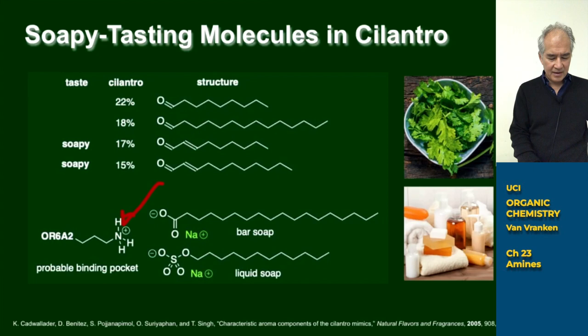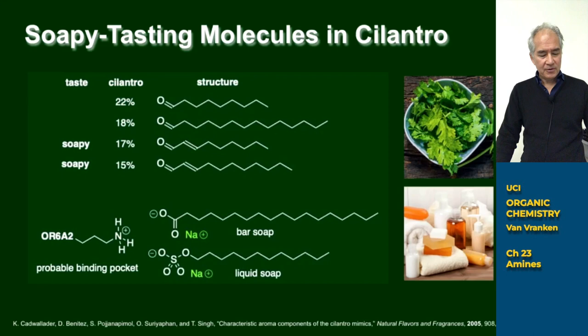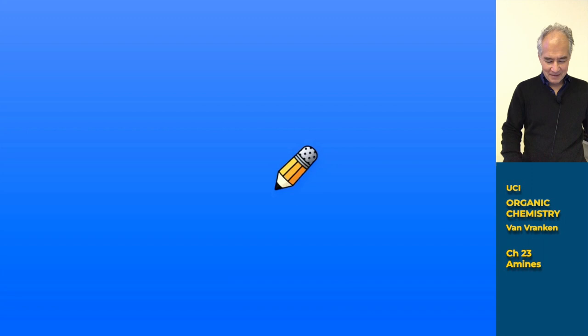It's probably forming a covalent bond for some individuals in that same odorant receptor binding pocket. Cilantro — I love the flavor, so I clearly don't have that SNP, that single nucleotide polymorphism, thank goodness. But I can't imagine how awful that would taste if I did have that.